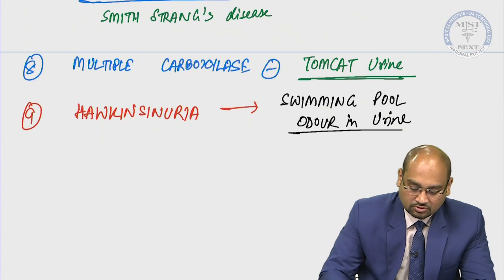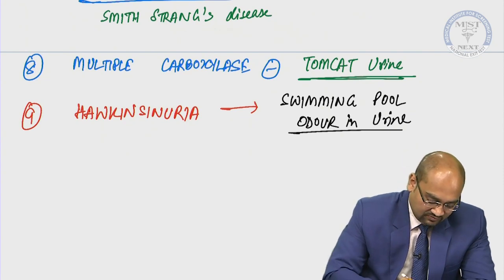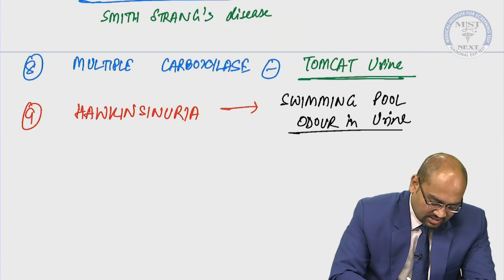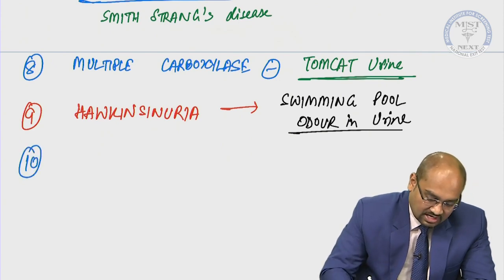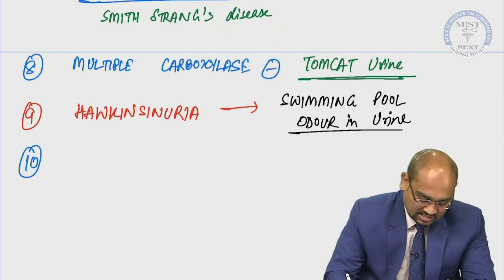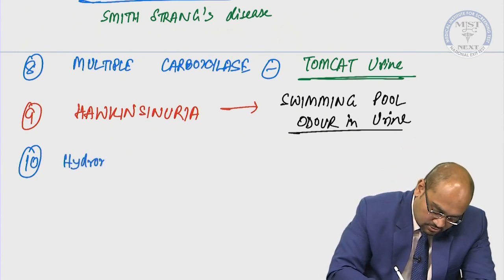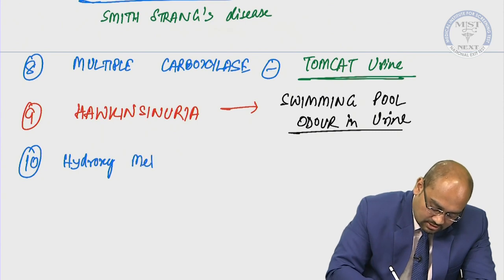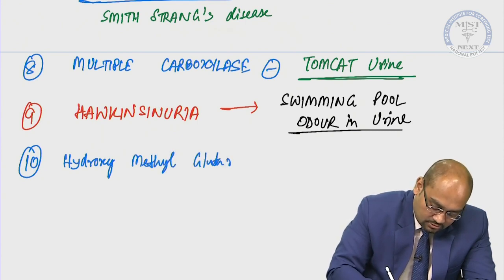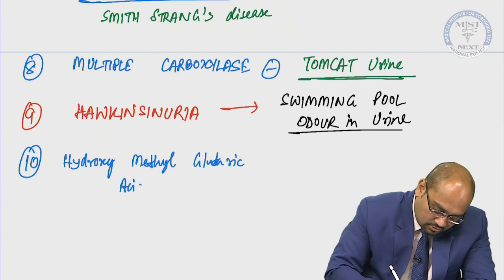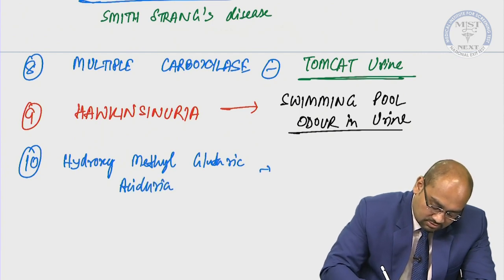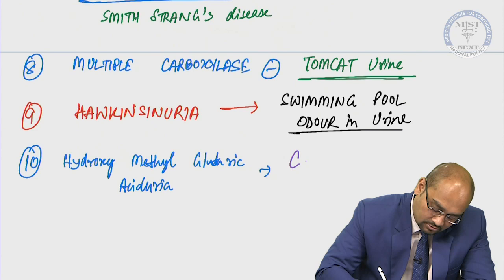And the last one: if we have HMG-CoA aciduria — hydroxymethylglutaric aciduria — please remember the answer is cat urine odor.